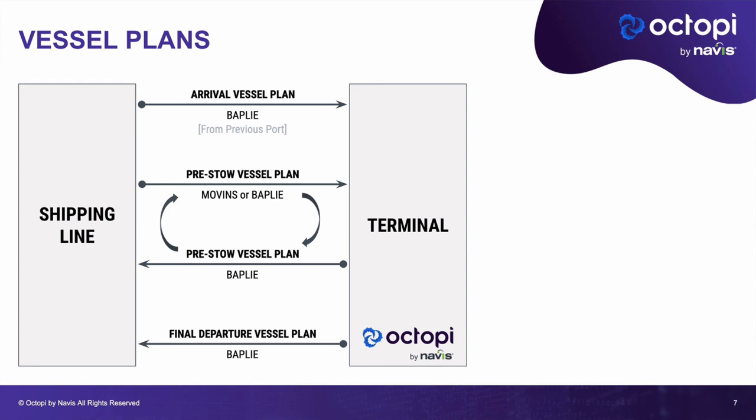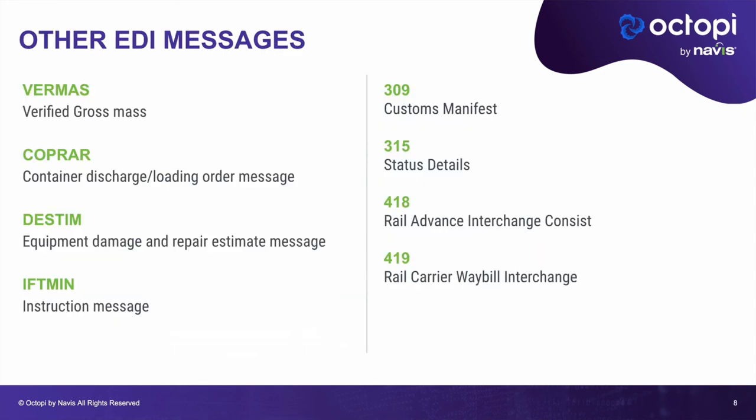Again, there is no equivalent EDI message for BAPLIEs in the ANSI-X12 format or standard, so everybody in the industry uses BAPLIEs or MOVINS. Now, there are other EDI messages that as a cargo terminal you might receive from some shipping lines — we've seen different things throughout the many implementations we've done with Octopi. I'm going to mention them quickly, but since they're not as commonly used, I won't spend too much time on them.